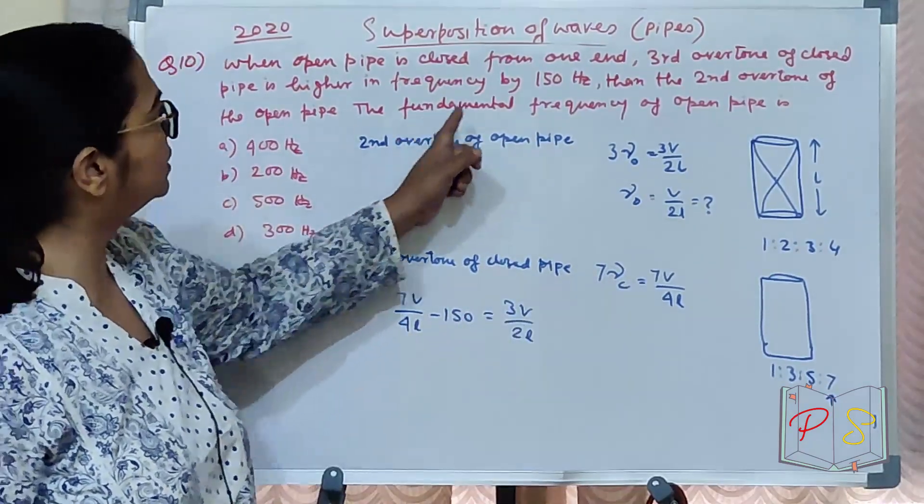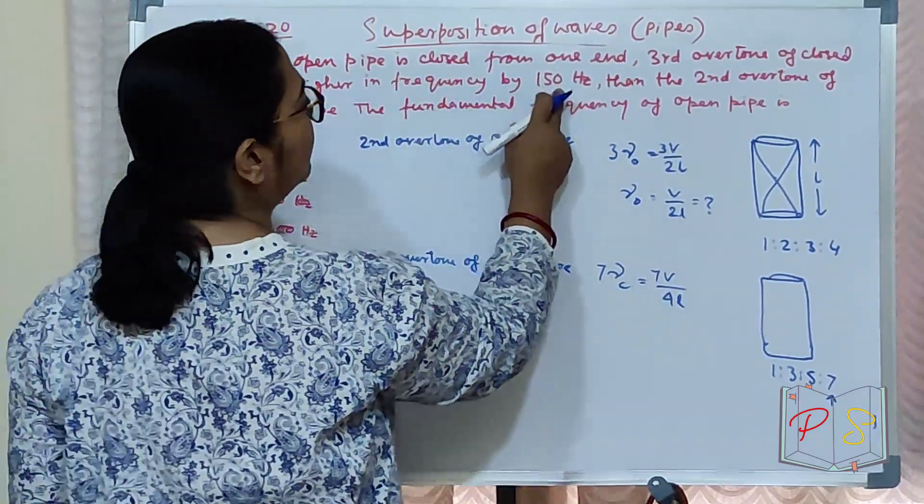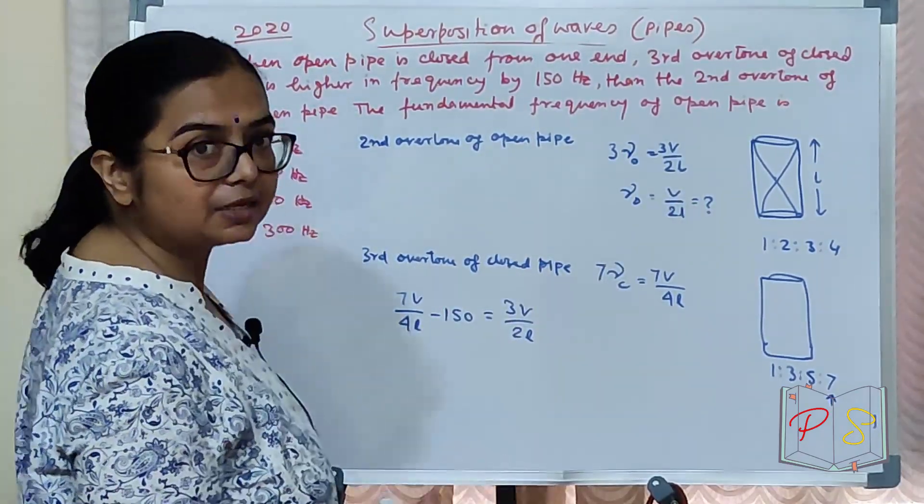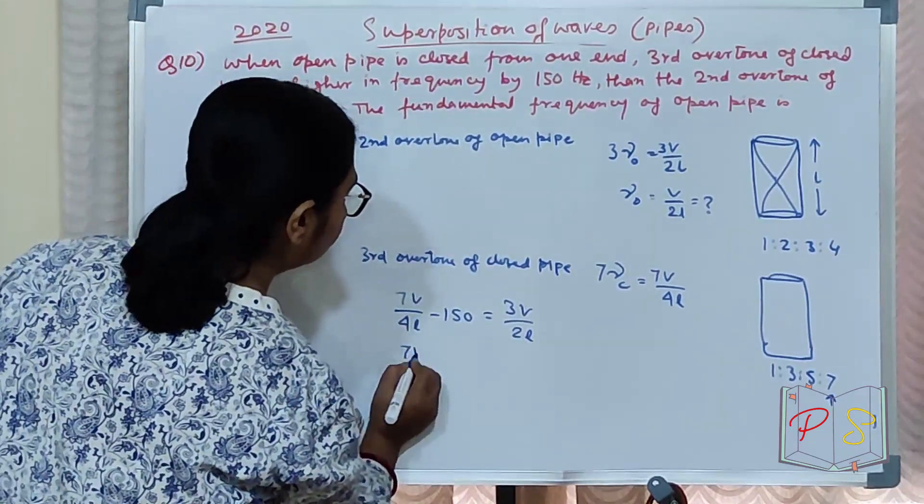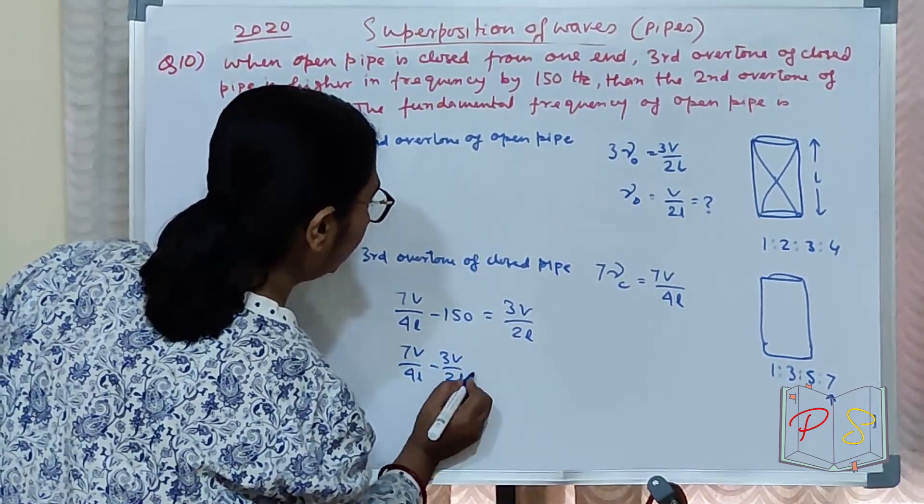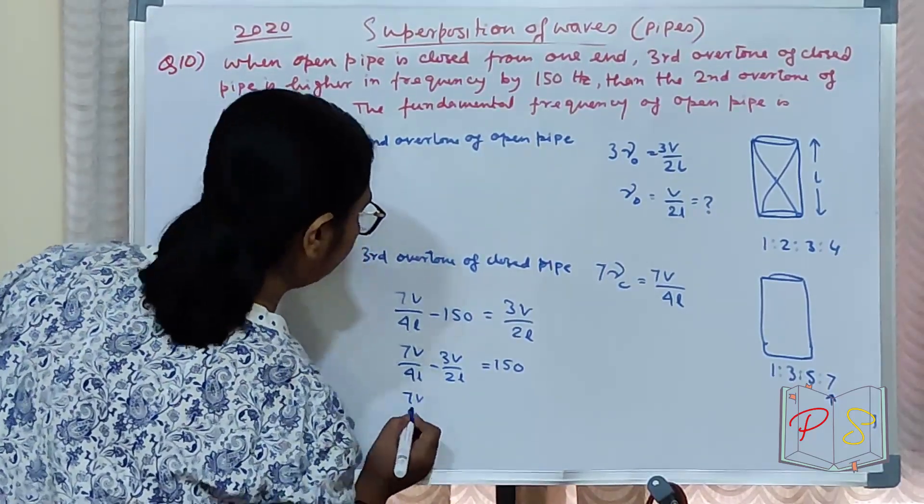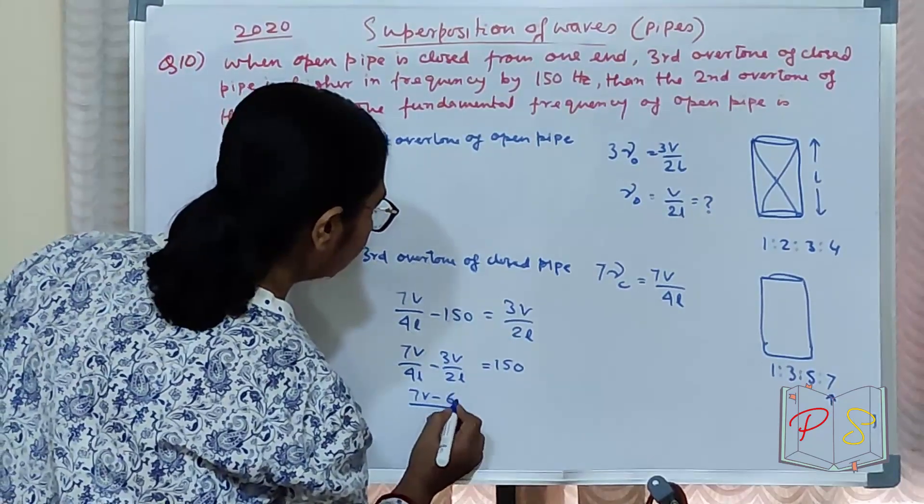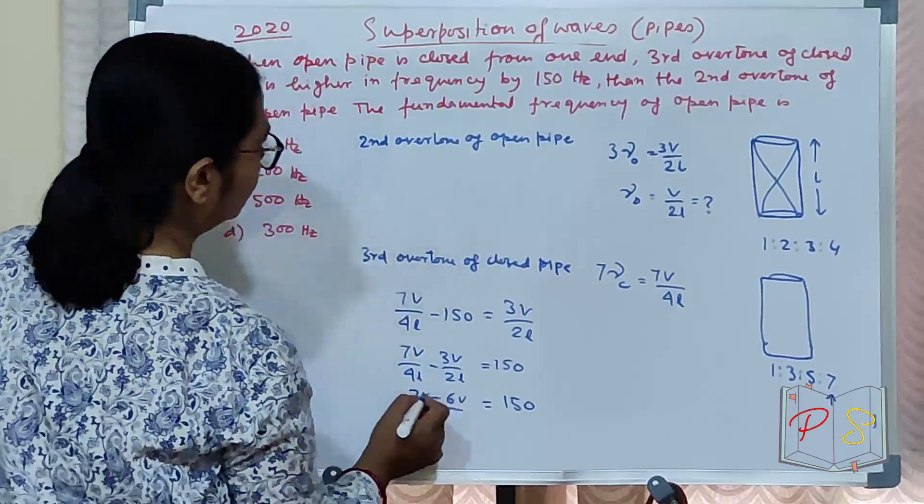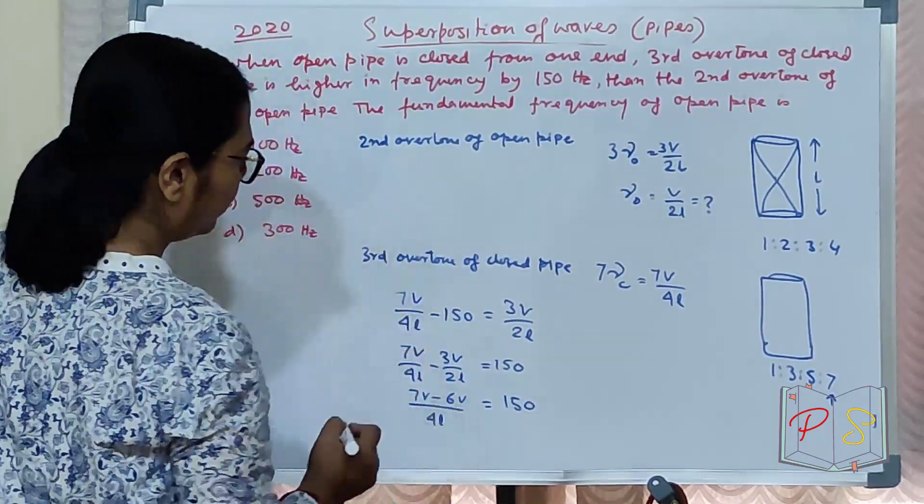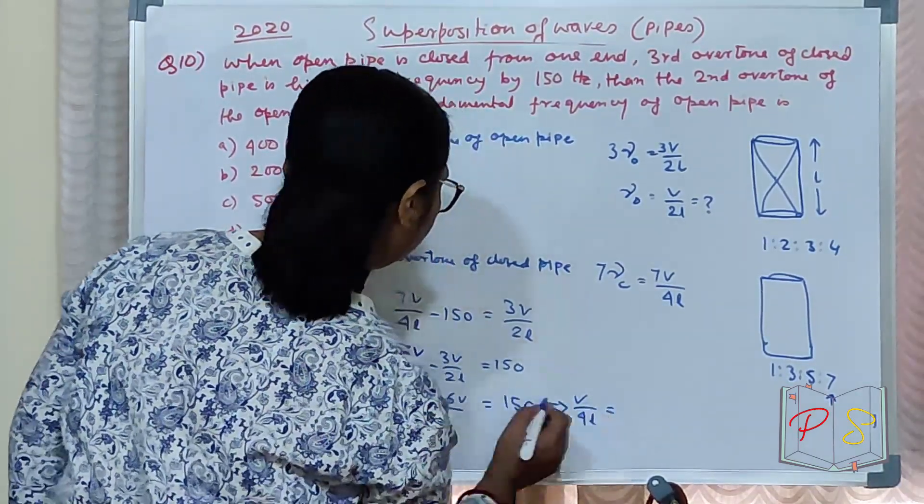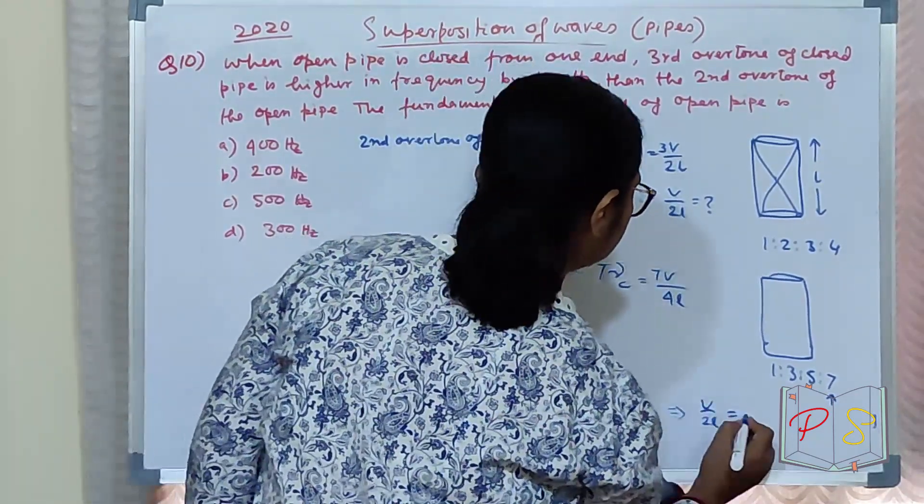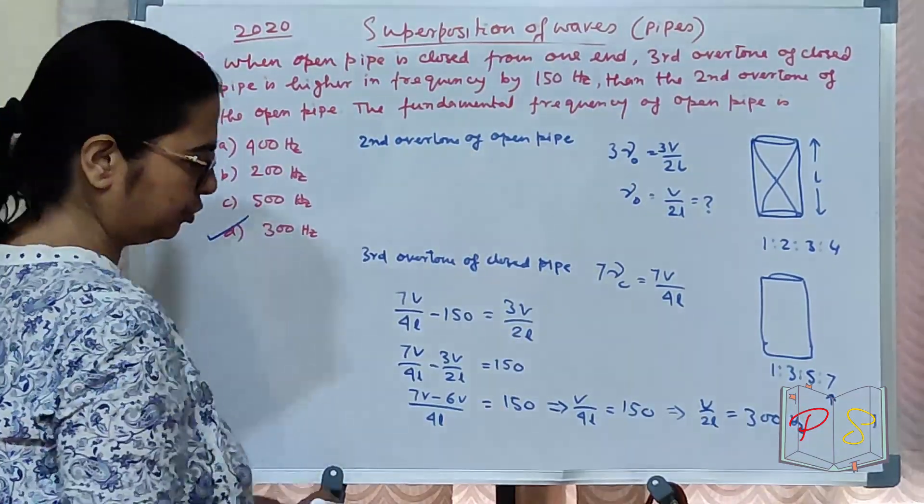The third overtone is higher by 150 Hz. So let's solve: 7V/4L minus 3V/2L equals 150. Taking 4L as the common denominator: 7V minus 6V equals 150 times 4L. So V/4L equals 150. We need V/2L, which is twice this: V/2L equals 300 Hz. 300 hertz is your correct option.